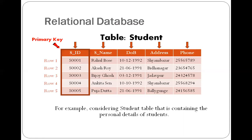It may also happen that we need to consider two or more attributes together to form a primary key. We will consider such an example later.